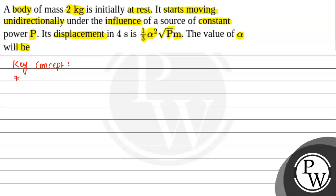The first concept we will use here is known as the work-energy theorem. Basically it says that total work done is always equal to change in kinetic energy, that is delta KE, or we can write kinetic energy in the final case minus kinetic energy initial.